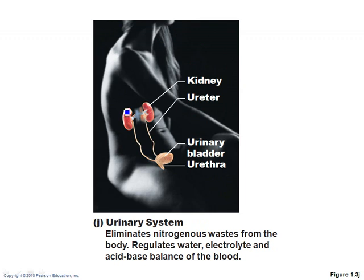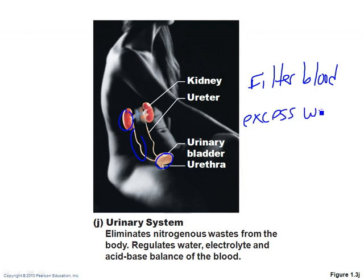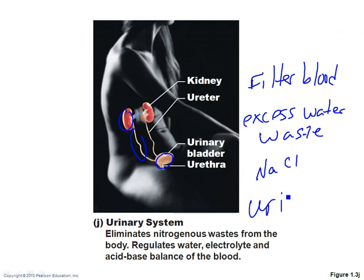The urinary system includes your kidneys, ureters, and bladder. The kidneys filter the blood, removing excess water and waste, and help balance electrolytes like sodium chloride. The byproduct is urine. Urine goes down the ureters, is stored in the bladder, and when you're ready to void, it leaves through the urethra.